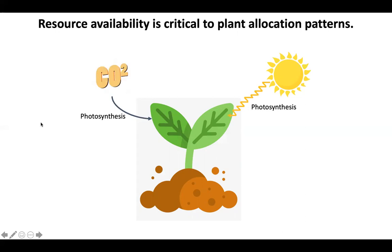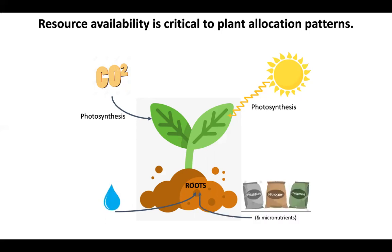We also have carbon dioxide getting taken up by the leaves. Carbon dioxide enters the plant through the little stomata — stomata are the holes on the leaves — and so this is also critical for photosynthesis. And then in the roots, we take up our water and our nutrients. The nutrients we primarily think of are nitrogen, phosphorus, and potassium, although there are lots of other micronutrients which we need in much smaller amounts, like calcium, boron, or iron.